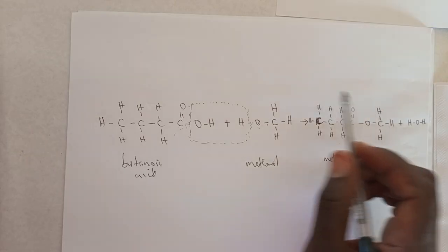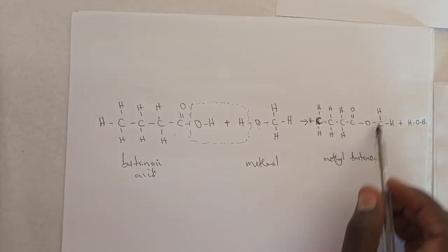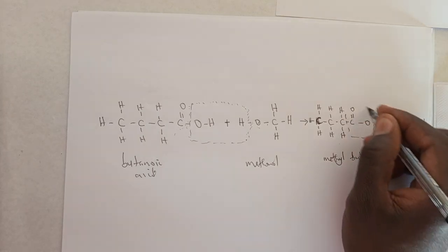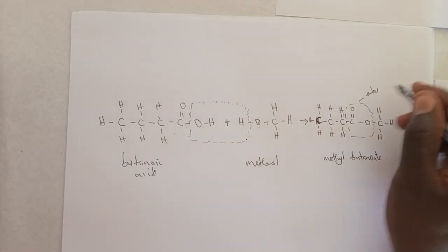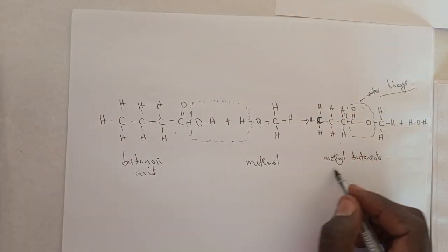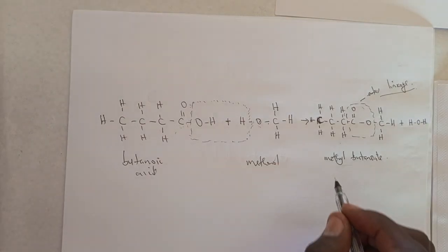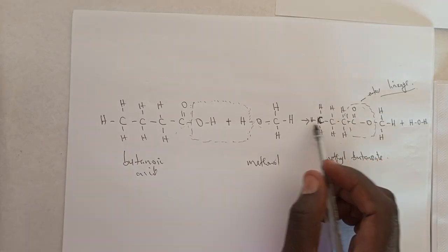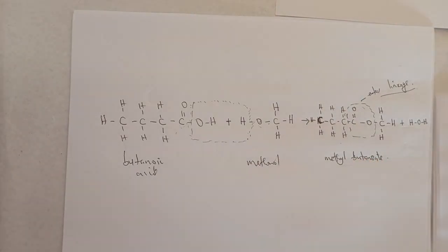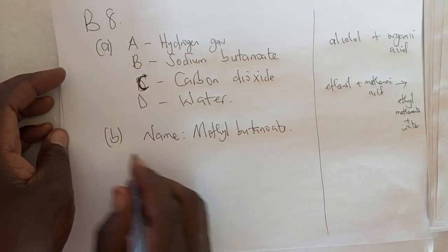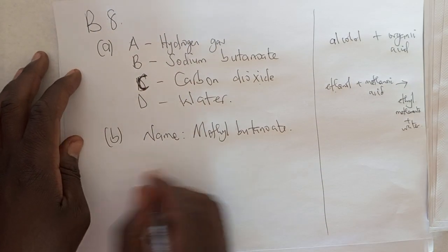It doesn't matter which side really, but ensure you respect the linkage here. This linkage is what we call an ester linkage. This is called methyl butanoate. You can even write it the other way, but this one must be on the other side.